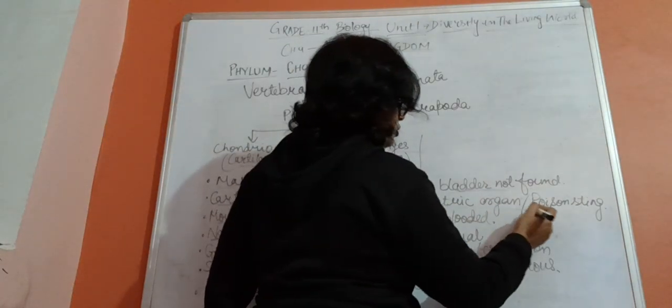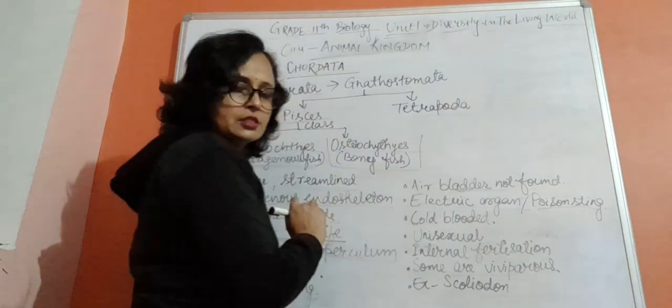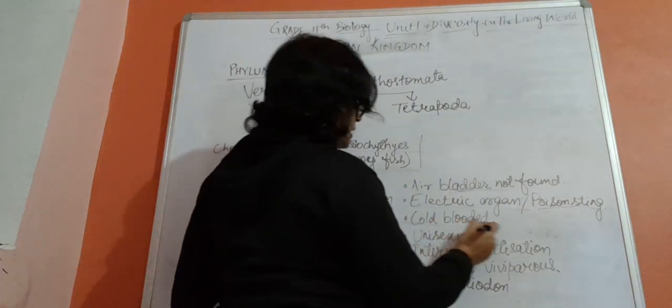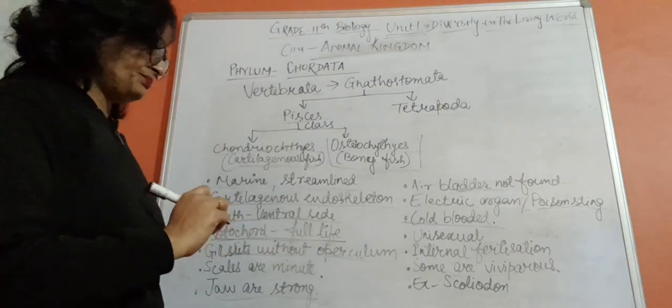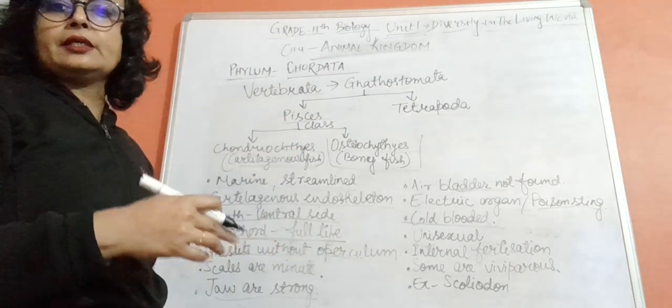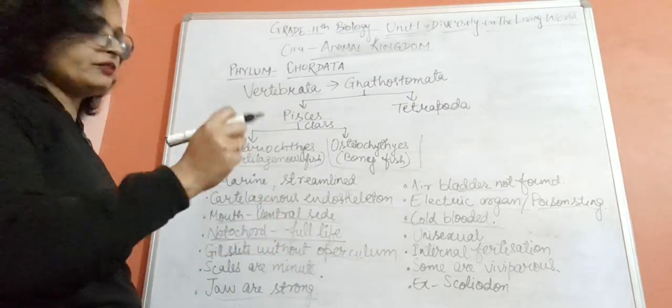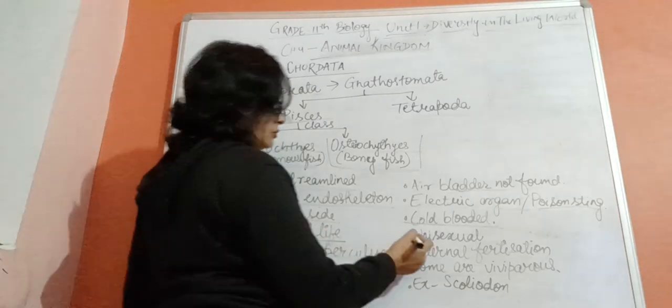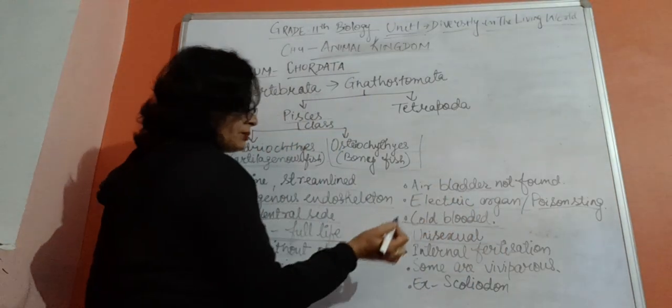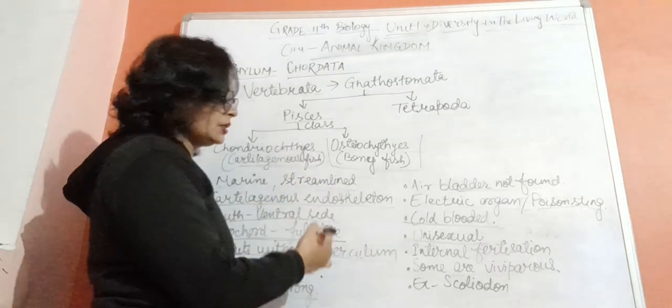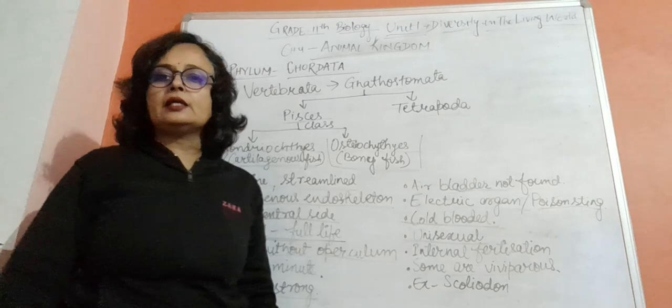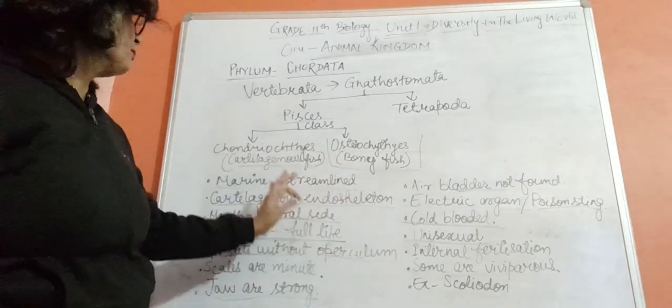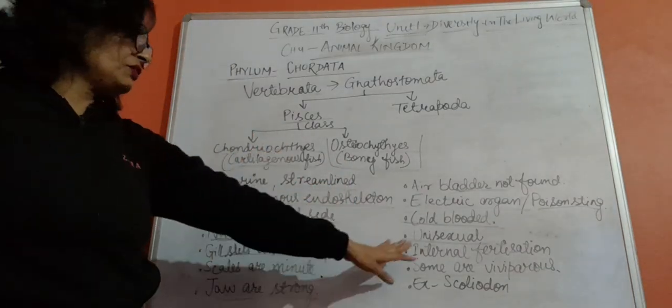These are cold-blooded, meaning their body temperature changes with the environment; they can't regulate it. They are unisexual - male and female are separate. Fertilization is internal. Most are oviparous (egg-laying), but some are viviparous and give birth to babies. Example: Scoliodon.